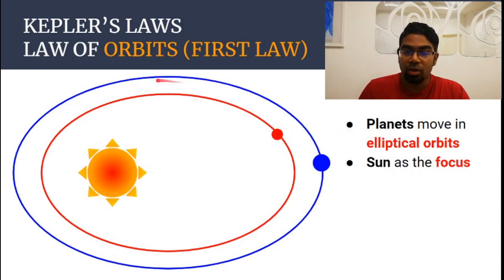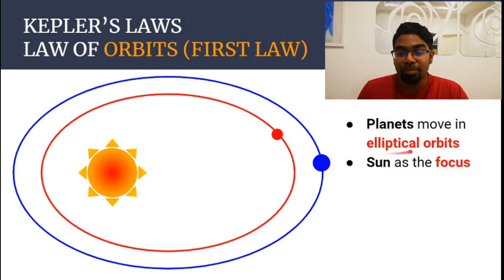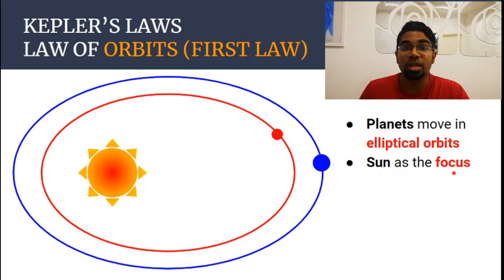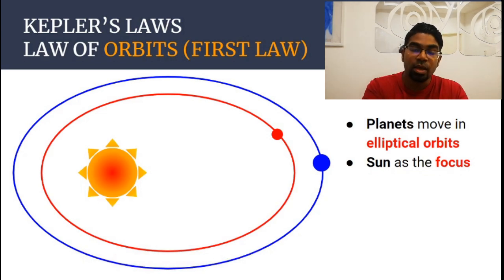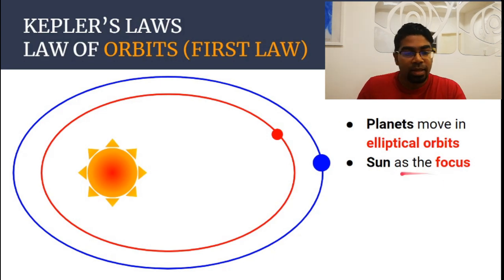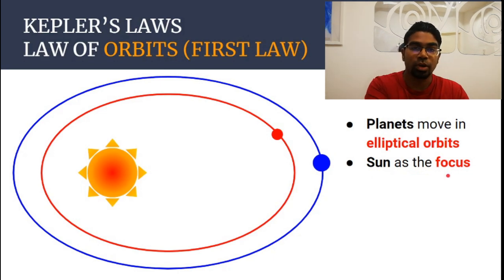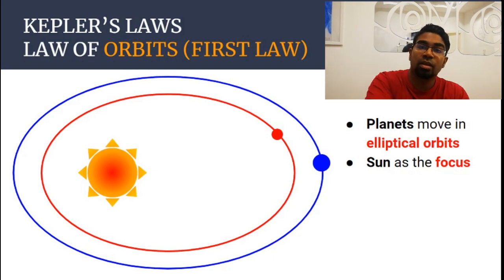The first law states that it's the law of orbits, and it is called the law of orbits because planets move in elliptical orbits. Kepler stated that the planets don't actually move in a perfect circle — they move in elliptical orbits. The sun is the focus of these orbits, meaning the sun is the fixed position. They don't say the sun is at the center because the sun is actually not at the perfect center — it is off-center, as you can see in this diagram. The planets move with the reference point of the sun, with respect to the sun.